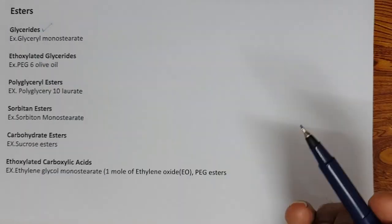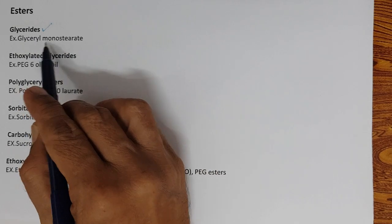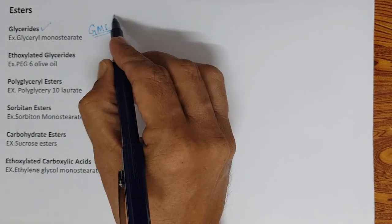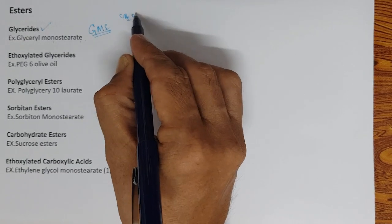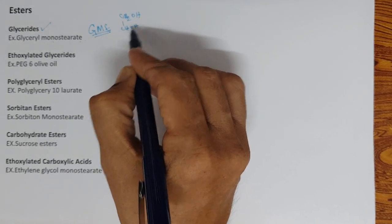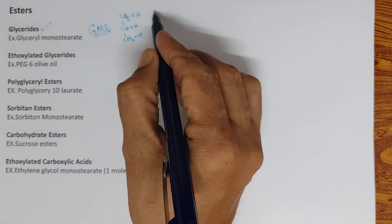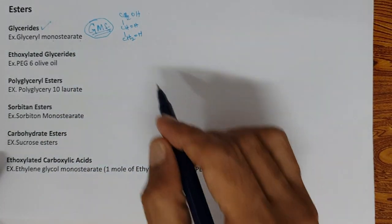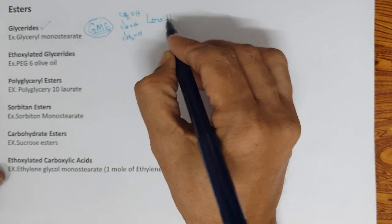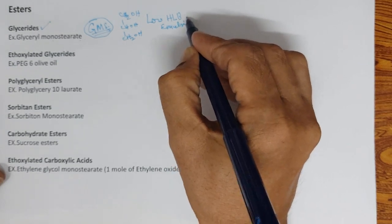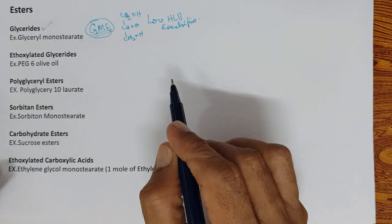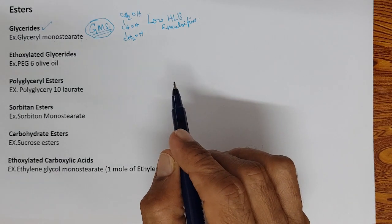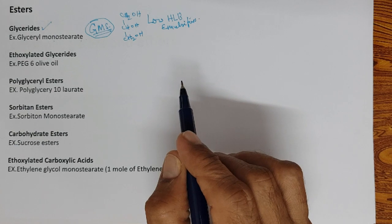Non-ionic emulsifiers as esters include glycerides. Glycerin derivatives — glyceride monostearate (GMS) — is a widely used emulsifier. It is a low HLB emulsifier, soluble in lipids/fats, not soluble in water, but with high HLB emulsifiers it works very well. Ethoxylated glycerides are made by reacting glycerides with ethylene oxide; for example PEG-6 olive oil, which is a polyethylene glycol glyceryl derivative.